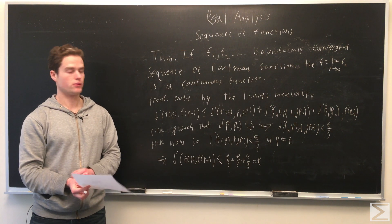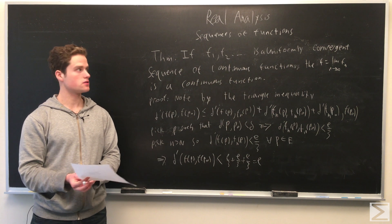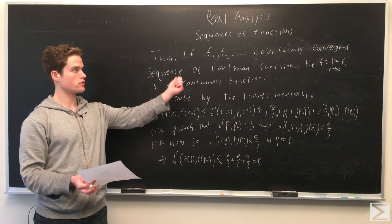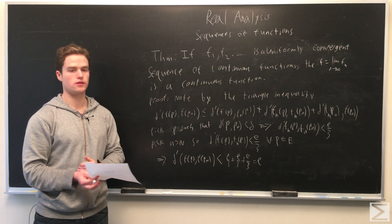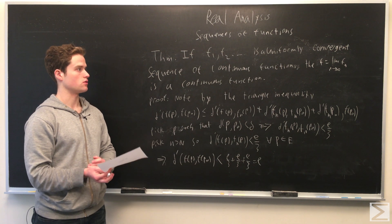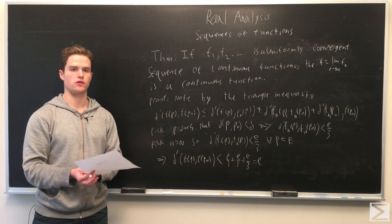Something neat we can prove about uniformly convergent sequences of functions is, if we have a uniformly convergent sequence of continuous functions converging to the limit f, then f is also a continuous function.